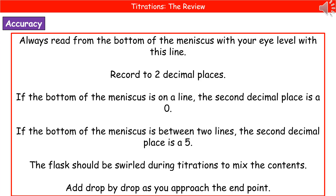Some improvements we've already mentioned: make sure your eye line is with the bottom of the meniscus each time you take a reading. Always record your readings to two decimal places — if the bottom of the meniscus is on a line the second decimal place is a zero, and if it's between two lines the second decimal place is a five. Make sure you swirl your flask between drops of acid being added so there's an even mixture, and as you get towards the end point, add the acid drop by drop to ensure it's as accurate as possible.